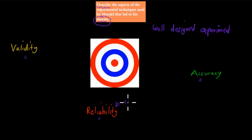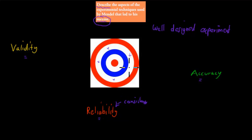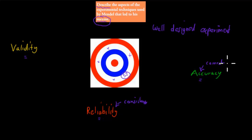Reliability is to do with consistency. Imagine a dartboard — if you throw darts and they land in different spots, that's not consistent. Reliability means you get them all in the same area. But the problem is, if they're all grouped away from the bullseye, it's not accurate. Accuracy means getting the correct, expected result — the result you're wanting. So if you have both reliability and accuracy, you'll get them all in the same area, and that area will be the bullseye.